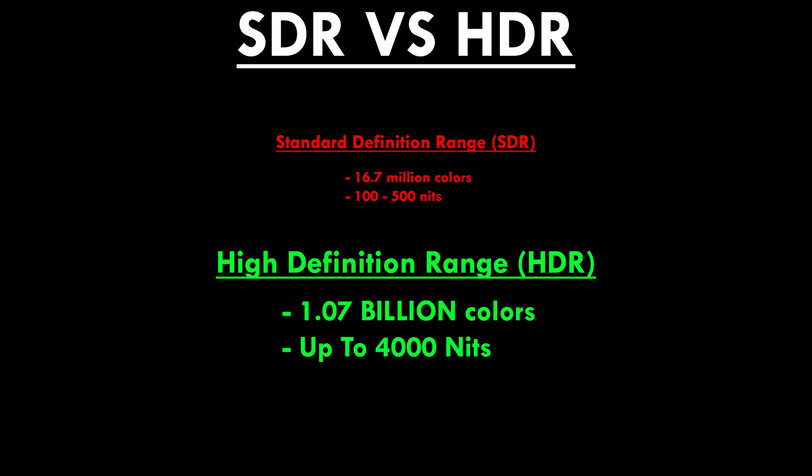Moving on: standard definition range, aka SDR, can only go up to 100 to 500 nits and support 16.7 million colors, whereas high dynamic range, HDR, supports up to 4000 nits with 1.07 billion colors. This is a huge jump.